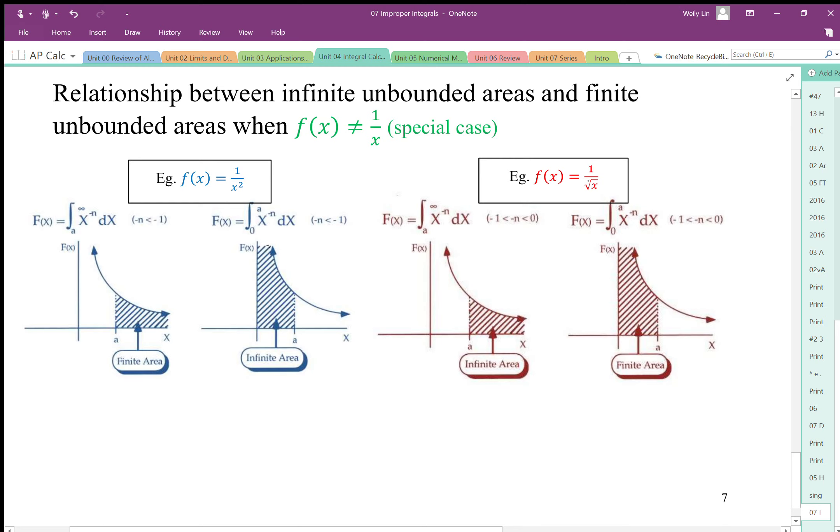For these denominators that are not very powerful, they tend towards 0 slower, and it does not pinch off the area quick enough, and this area ends up being infinite.